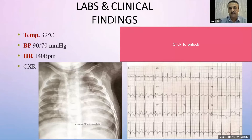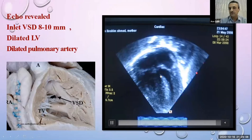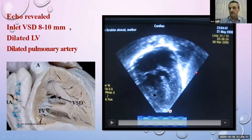On ECG, there is a diphasic QR complex in the midprecordial leads, which is the sign of biventricular hypertrophy. Echocardiogram shows a huge hole between the two ventricles — left ventricle and right ventricle — with a dilated left side and dilated pulmonary arteries.